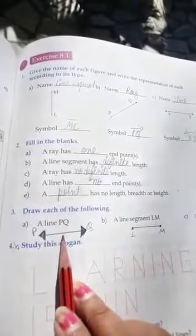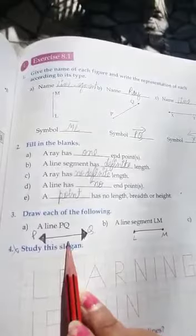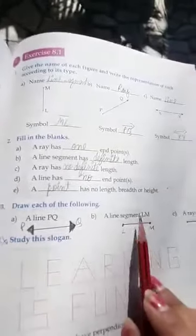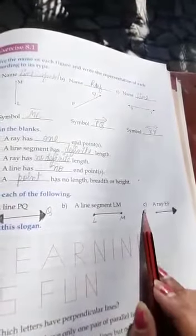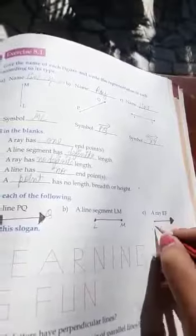Third part is: draw each of the following. First, we will draw a line PQ. You can draw it of any length using a scale, but on both sides arrows should be there. Line segment: both side end points should be there. And for ray: one side end point should be there and other side should be an arrow. In this question, this exercise fourth part we will not do, so you can leave it. With this our exercise 8.1 is complete.